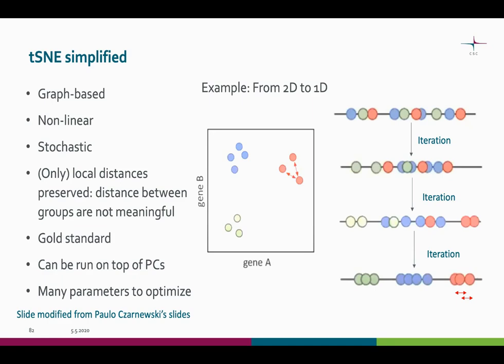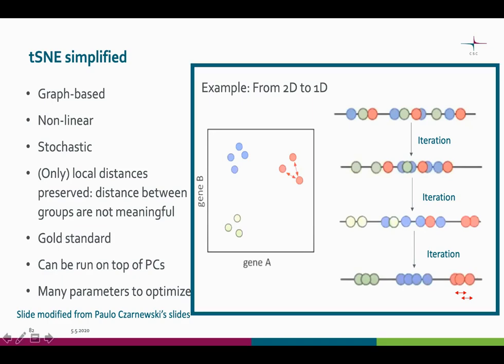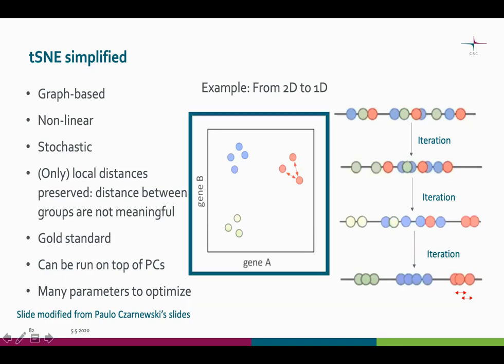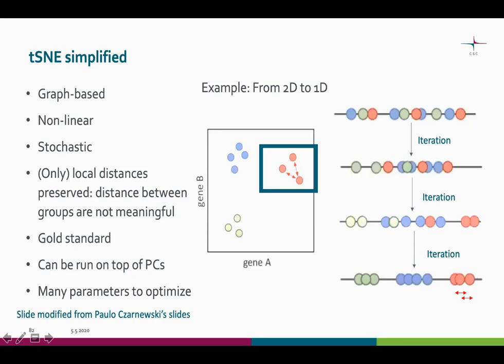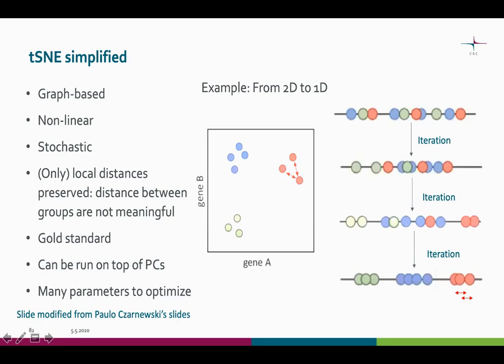There are many parameters to optimize with TSNE. In a simplified example of going from two-dimensional data to one-dimensional data using TSNE, we look at the distances between different dots and throughout iteration rounds try to make the data so that the local distances are preserved — they are similar in both spaces. Remember that the global distance between groups doesn't mean that much, but the distance within the group is meaningful.